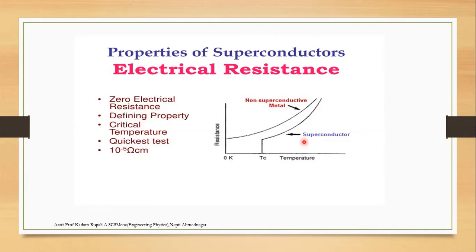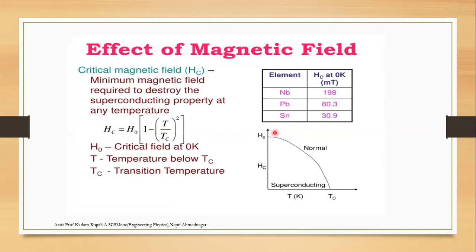When critical temperature is zero and resistance also becomes zero, that shows superconductivity. Next is the effect of a magnetic field. Superconductivity also has an effect on the magnetic field, which is called the critical magnetic field, denoted by Hc.